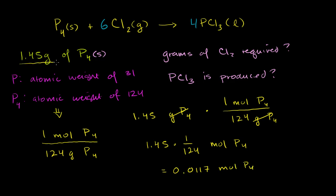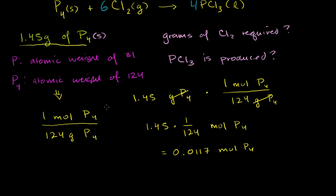So this is equal to 0.0117 moles of molecular phosphorus. That's what we're starting off with — that's what the 1.45 grams represents. That makes sense: if we had an entire mole of molecular phosphorus it would weigh 124 grams, we only have 1.45 grams, so it's a little bit more than one-hundredth of a mole, which is consistent with 0.0117.